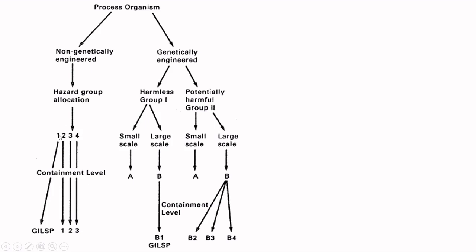So the most dangerous, most pathogenic organism will be in Hazard Group 4, and we use Containment Level 3 to prevent spread of that organism. That covers non-genetically engineered organisms. For genetically engineered organisms, we ask another question: whether the organism belongs to Group 1 (harmless) or Group 2 (potentially harmful). There is also another group that is always harmful — we don't do industrial large-scale production with that group.